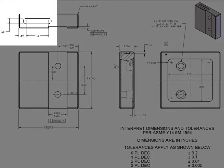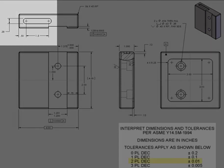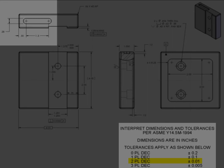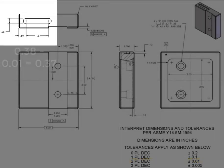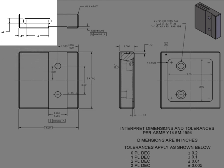For example, the three eighths wide slot in the top view has two decimal places. Therefore, its tolerance is 0.02 or 20 thou. Its minimum feature size is 0.38 minus 0.01 which equals 0.37, and its maximum feature size is 0.38 plus 0.01 which equals 0.39 inches.